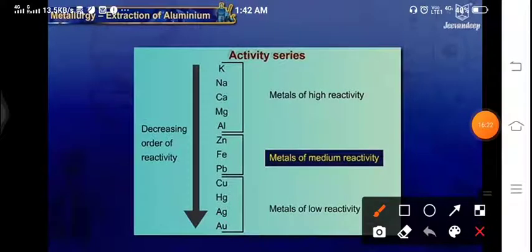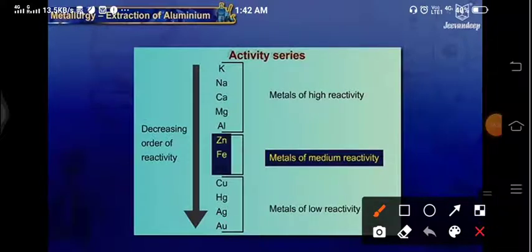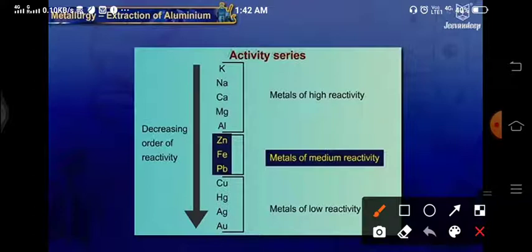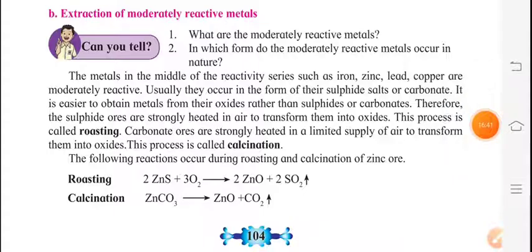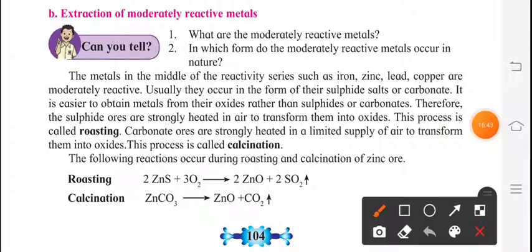This is the activity series for zinc, iron and lead. These metals have medium reactivity with a decreasing order of reactivity. The metals in the middle of the reactivity series such as iron, zinc, lead, and copper are moderately reactive. Usually they occur in the form of their sulphides, salts or carbonates.